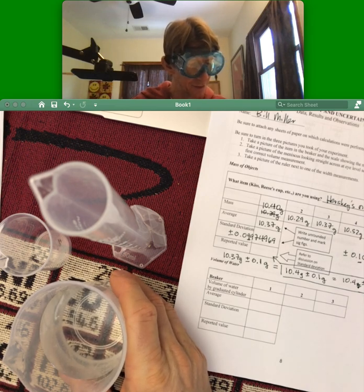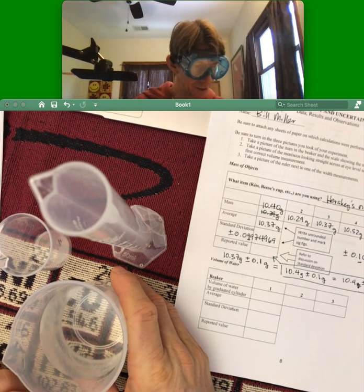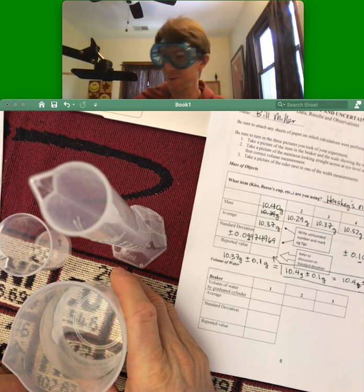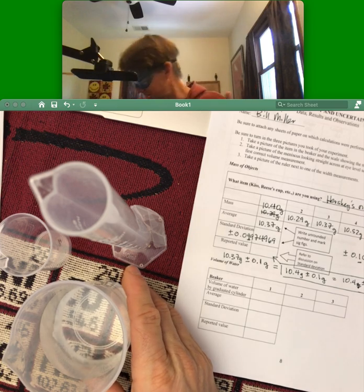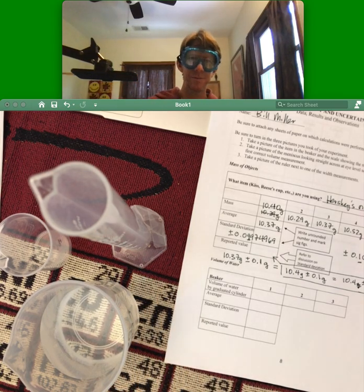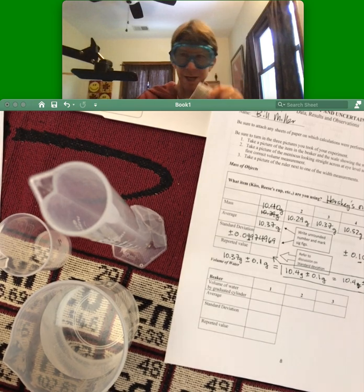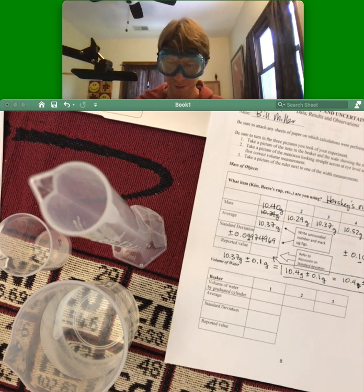The first step says pour 25 milliliters of deionized water into the dry 250 milliliter beaker. I should mention that I also have a cloth here to dry the beaker, and I'm going to need that in a few minutes.